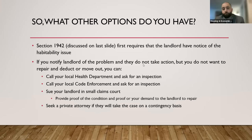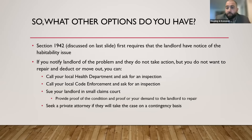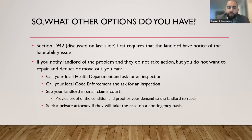Most importantly, when you have a habitability issue, you need to tell your landlord — they can't be expected to fix a problem they don't know about. If you notify the landlord and they don't take action and you don't want to repair and deduct or move out, you can call the local health department or code enforcement and ask for an inspection. In my experience, they come out pretty quickly, will cite the landlord, and give them usually 30 to 35 days to fix the issue.